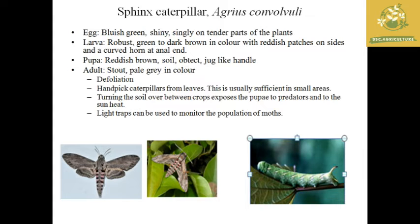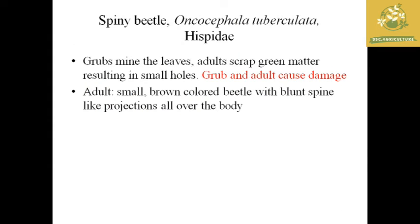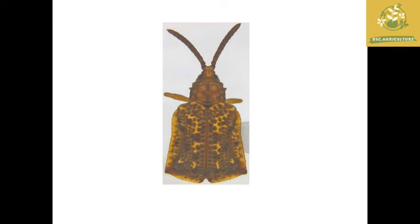The next pest is the spiny beetle, with scientific name Oncocephala tuberculata, which comes under the family Hispidae. The grubs mine the leaves, and the adult scrapes the green matter, i.e., the chlorophyll content of the plant, resulting in small holes. Both grub and adult cause damage by eating away the chlorophyll content in the leaves. The adult is a small, brown-colored beetle with blunt spine projections on its body.